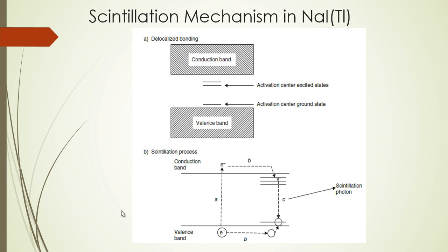When the sodium iodide crystal is not exposed to any radiation, all electrons stay in the valence band and there is no electron in the conduction band. However, when radiation is present — for example a gamma ray photon — it imparts its energy to one of the electrons of the crystal. This electron gains a lot of energy and moves through the crystal, causing ionizations and excitations as it goes.